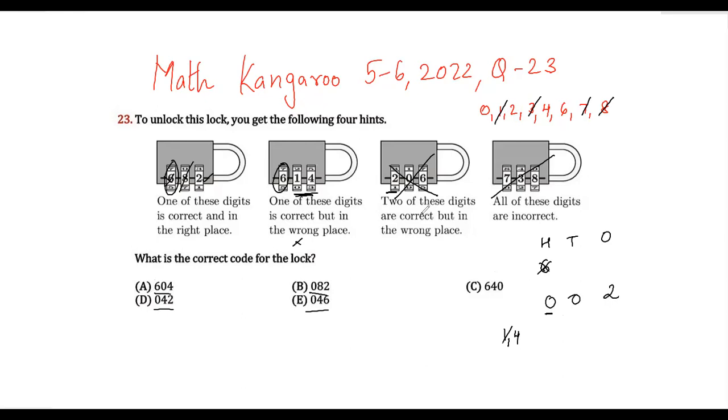Now they're saying two of these digits are correct but in the wrong place. So that means 0 is not here. 0 is here. So 0 is correct. 2 is correct. And the only digit that remains here is 4. So the answer is option D which is 042.